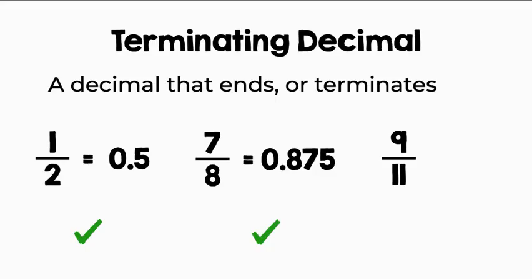Is nine-elevenths a terminating decimal? Nine divided by eleven equals 0.818181, repeating infinitely. We represent that with a line over the digits eight and one, and therefore, nine-elevenths in decimal form is not a terminating decimal.